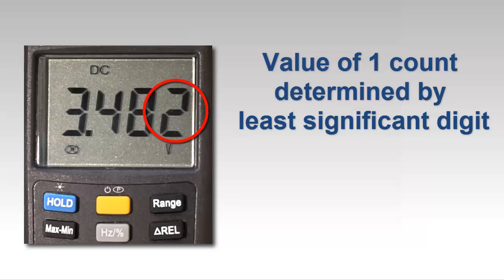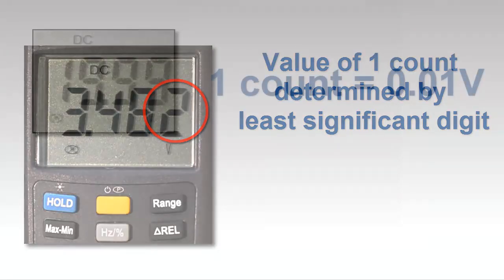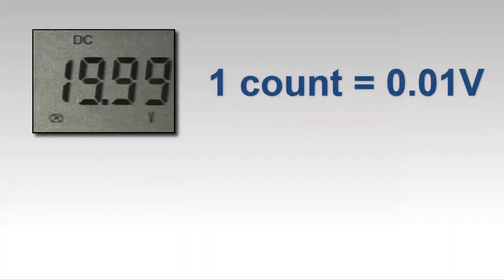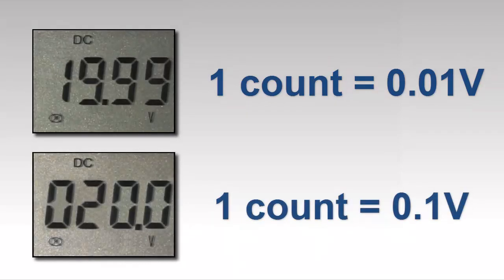In the preceding example, for a reading of 19.99 volts, each count equals one-hundredth of a volt. For a reading of 20 volts, each count equals one-tenth of a volt. Therefore, an instrument's measurement range can significantly impact accuracy, as we'll discover later in this video.